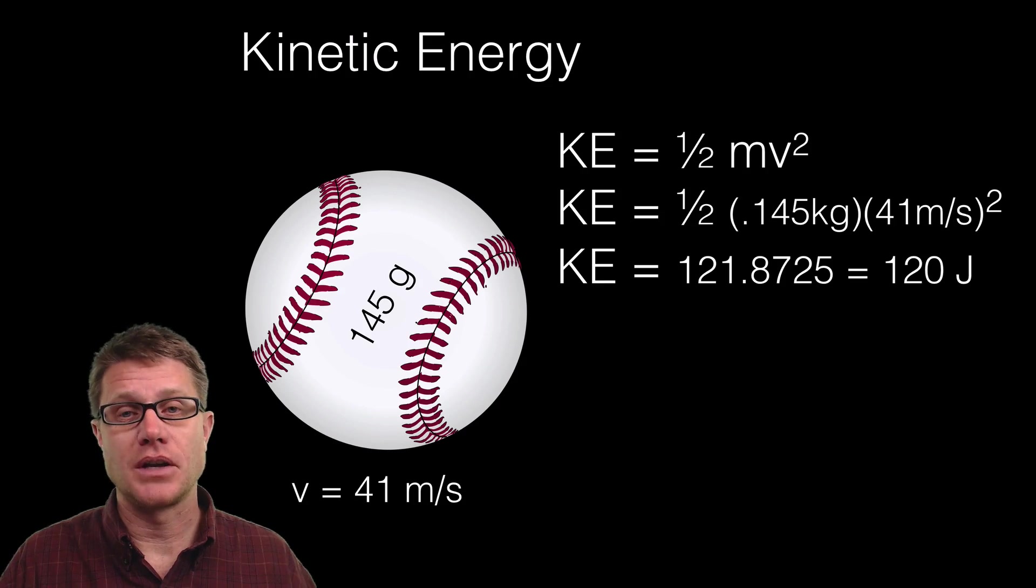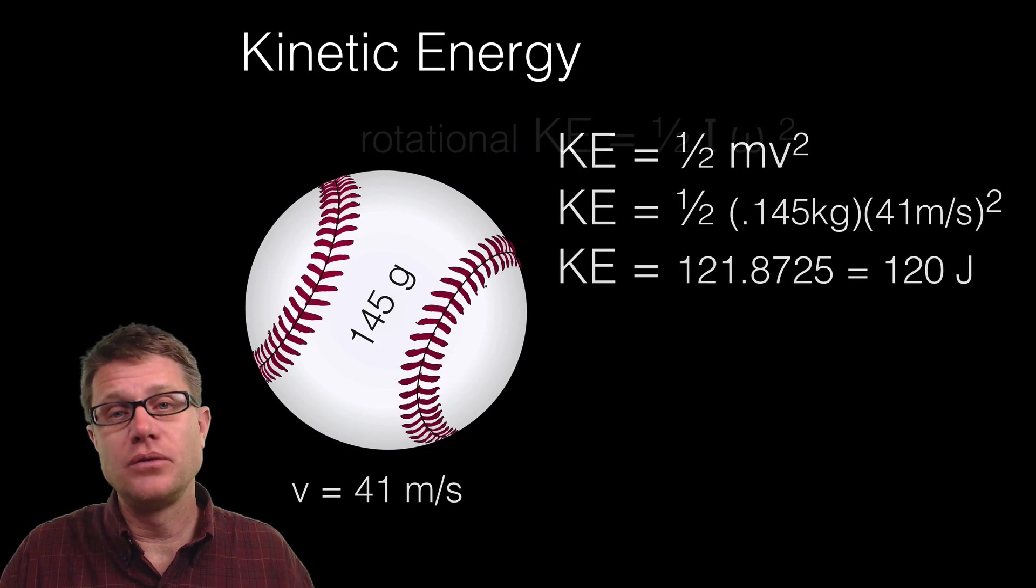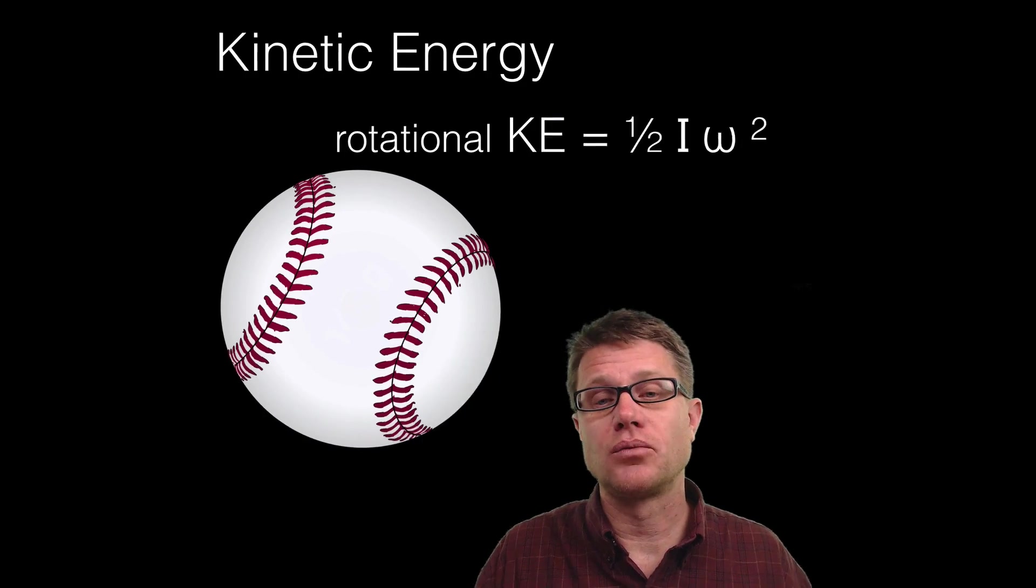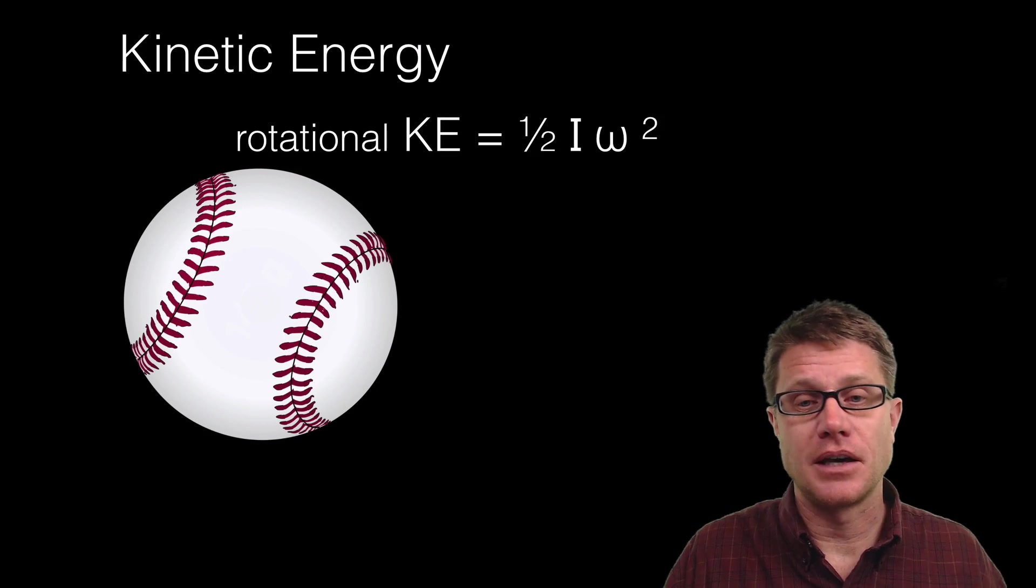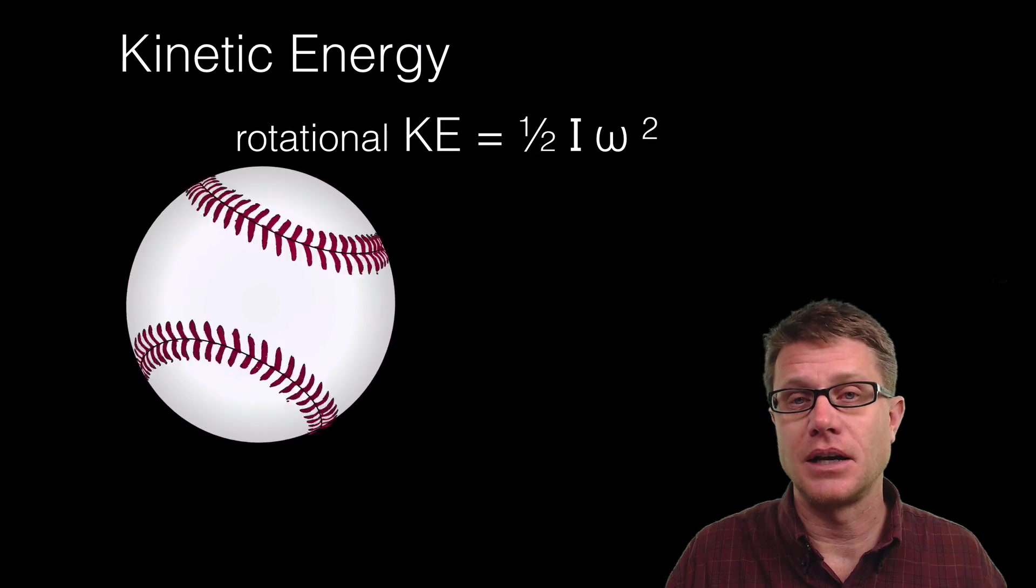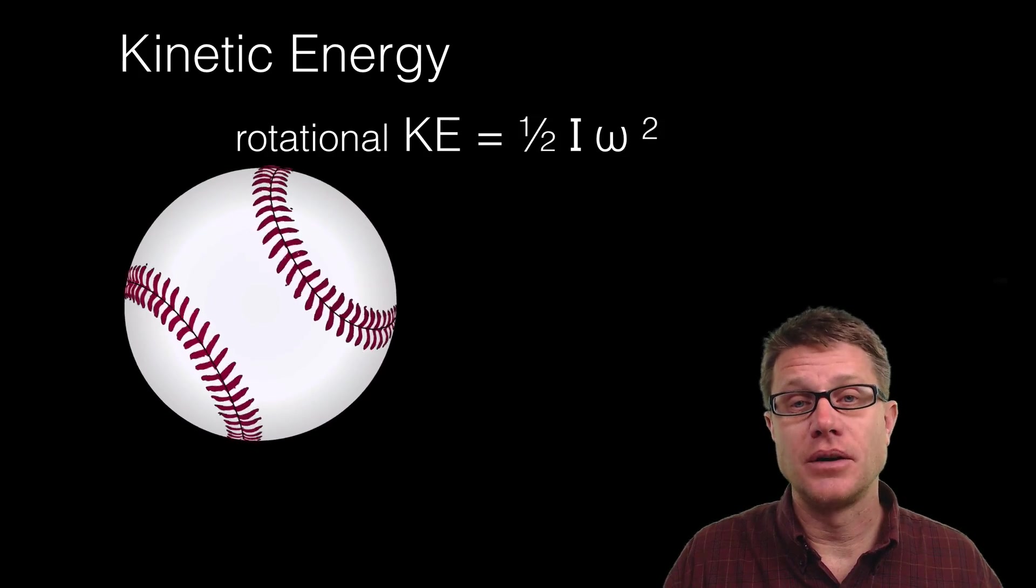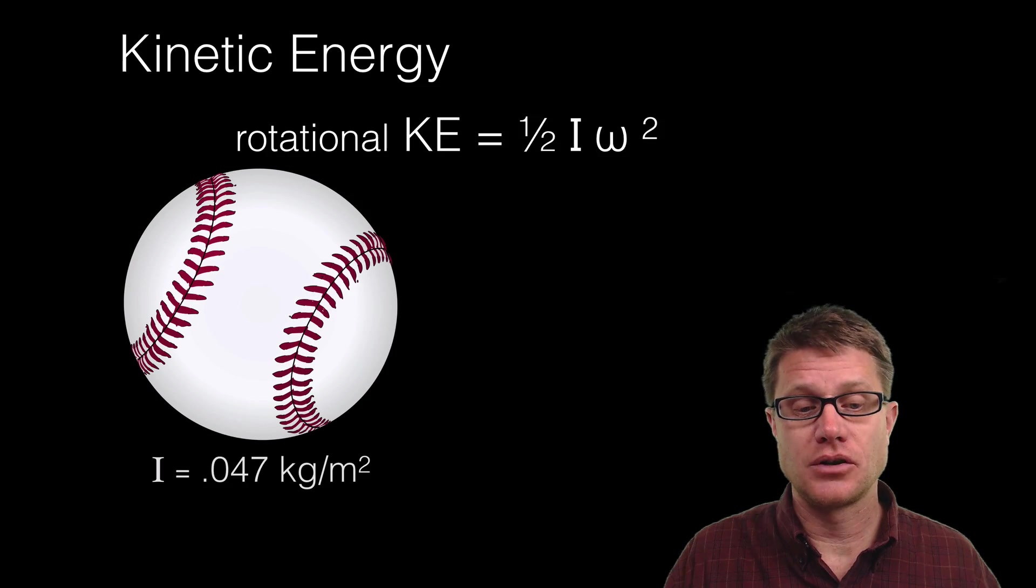So that energy is in the motion of the object. But it does not have to be moving to have kinetic energy. It could be simply rotating. And our equation is like this. It is one half i omega squared. So let's say that is rotating like this. All I need to know is what is its rotational inertia.